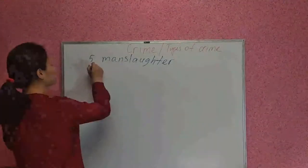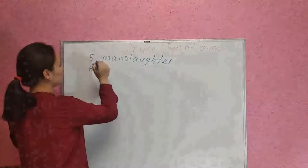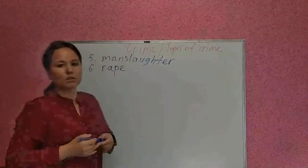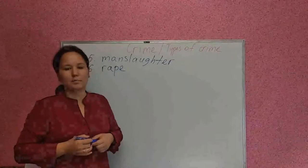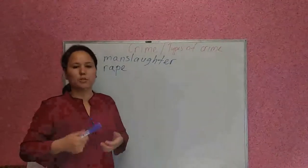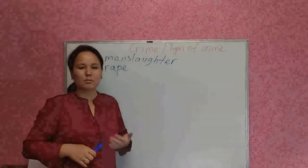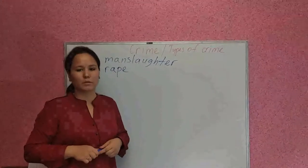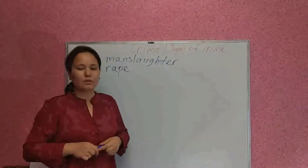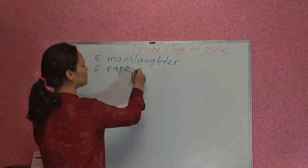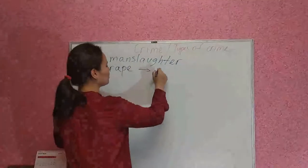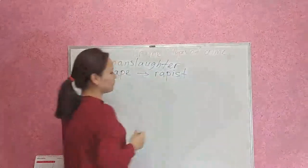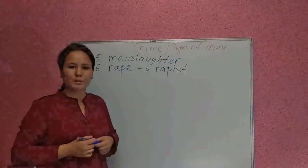Number six is rape. Rape is a type of crime where one person makes another person have a sexual relationship. A person who commits this type of crime is called a rapist. I hope that's clear.